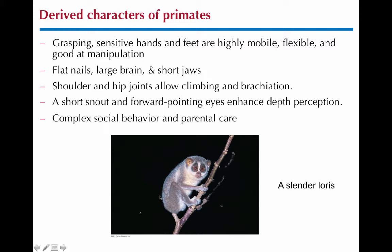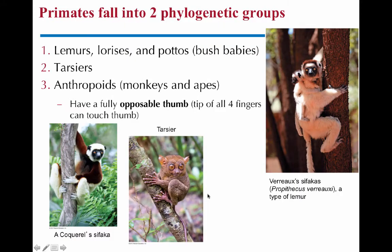Here's an example of a loris — it's in the prosimian group. You can see it's quite small and it lives in trees. Look at those grasping hands. The prosimians include lemurs, lorises, and pottos, or bush babies.